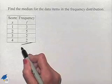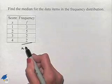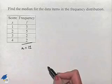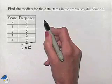We're going to begin by noting that if we add the frequencies together, we come up with the number of items, which is going to equal 12. To find the position of the median, we're going to use the formula n plus 1 divided by 2.